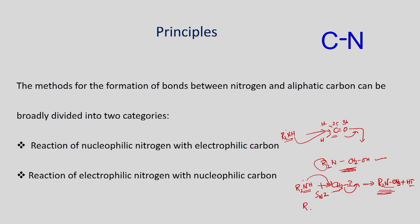Another example: if you have acid chloride, similarly with an amine, it can undergo addition reaction and you will form an amide plus HCl. These are some examples for the reaction of nucleophilic nitrogen with electrophilic carbons.